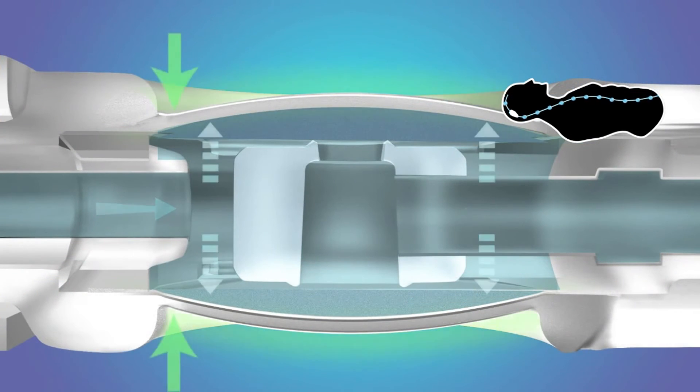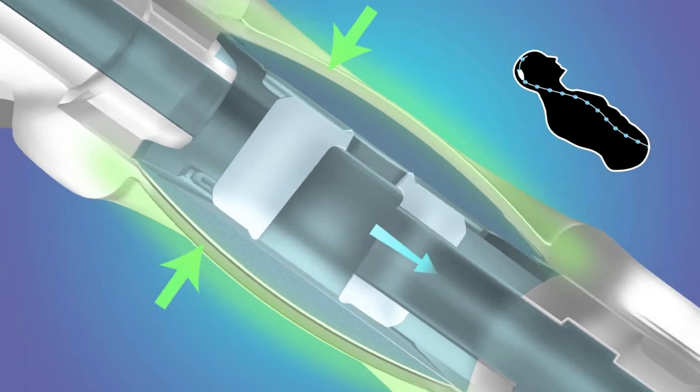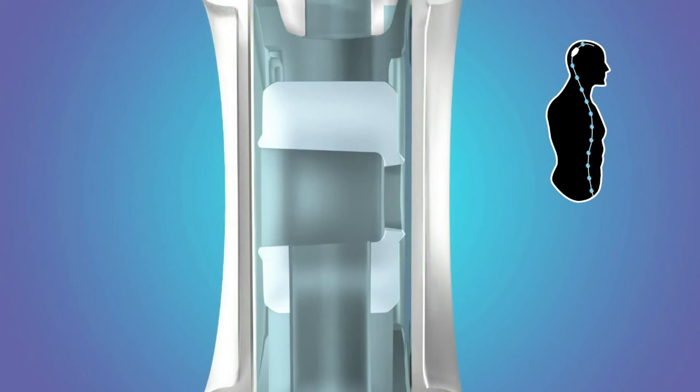When the patient is in the supine position, the membranes on either side of the delta chamber are relaxed or open, allowing for CSF flow. When the patient stands up, the negative pressure pulls the membranes closed, reducing the flow of CSF.